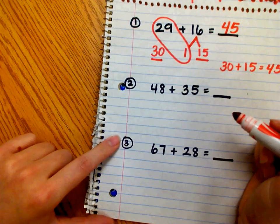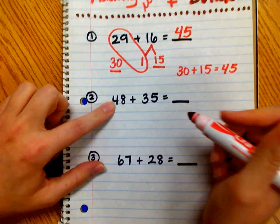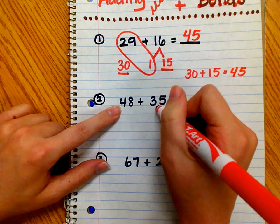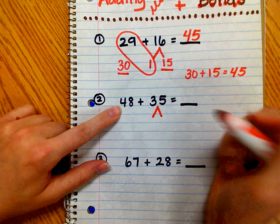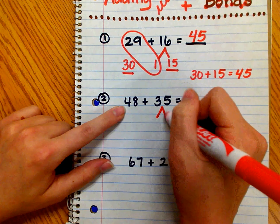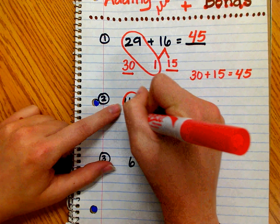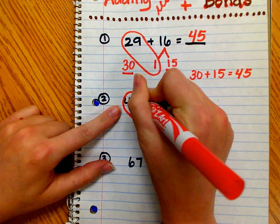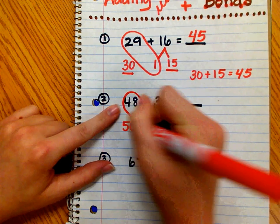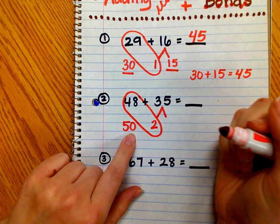Let me show you another example. So 48 only needs two more to make a multiple of 10. So I'm going to make a number bond with 35. I'm going to take 2 from 35 and give it to 48 to make 50, because that's much easier to work with in our heads.